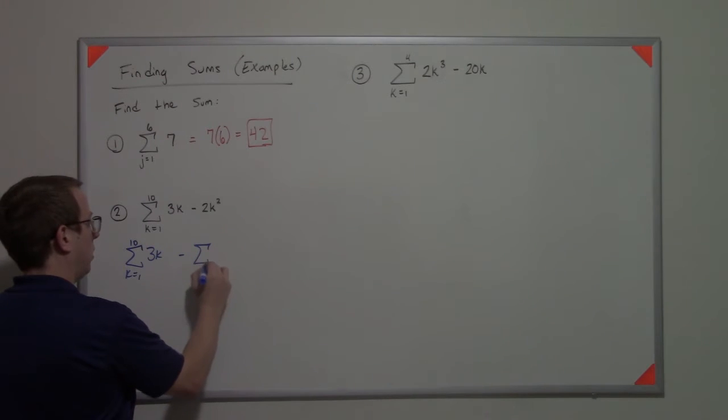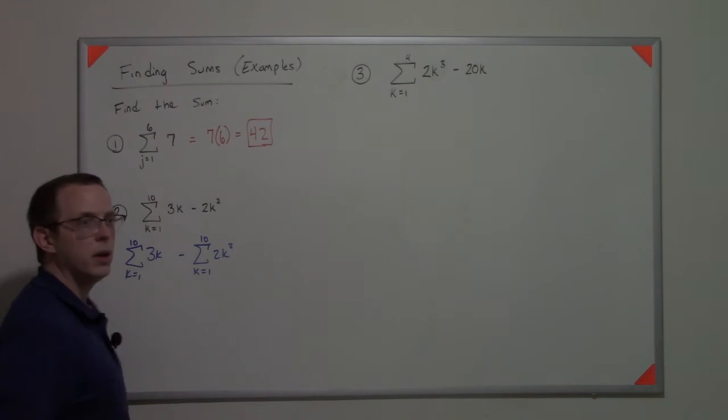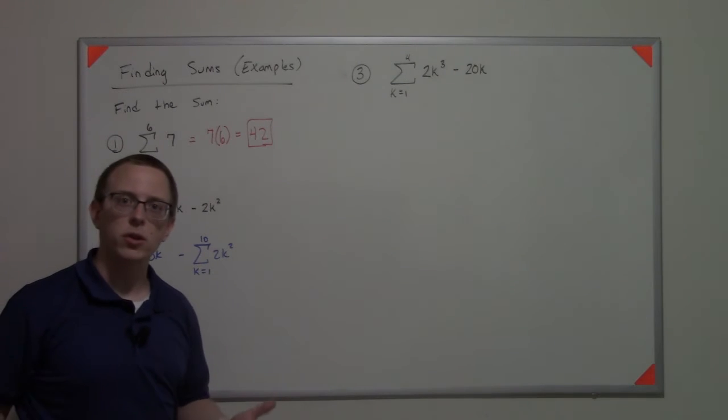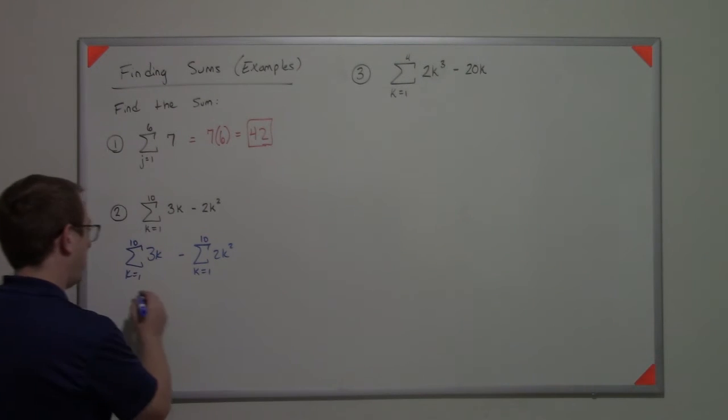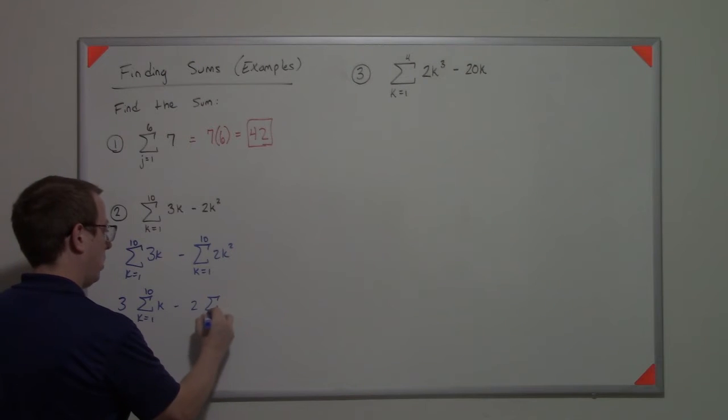We can say that's k equals 1 to 10 of 3k minus k equals 1 to 10 of 2k squared. At which point we can factor out the coefficients. We can say that's 3 times k equals 1 to 10 of k minus 2k equals 1 to 10 of k squared.